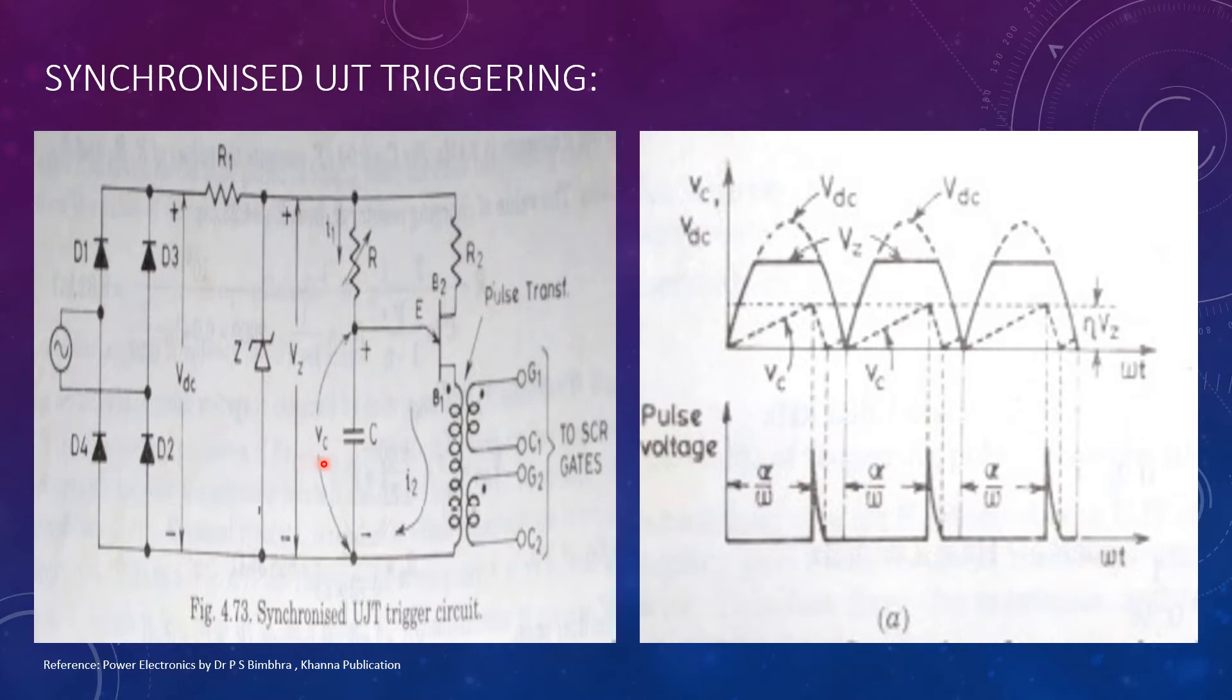When the voltage across the capacitor, VC, reaches eta VBB, the emitter-base 1 junction breaks down, sending a current I2 through the primary of the pulse transformer.